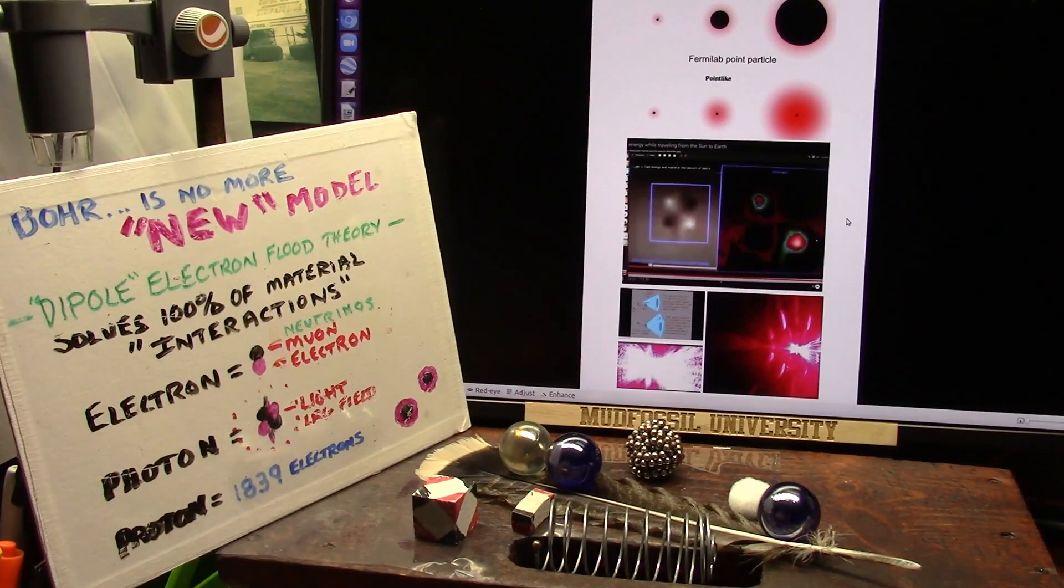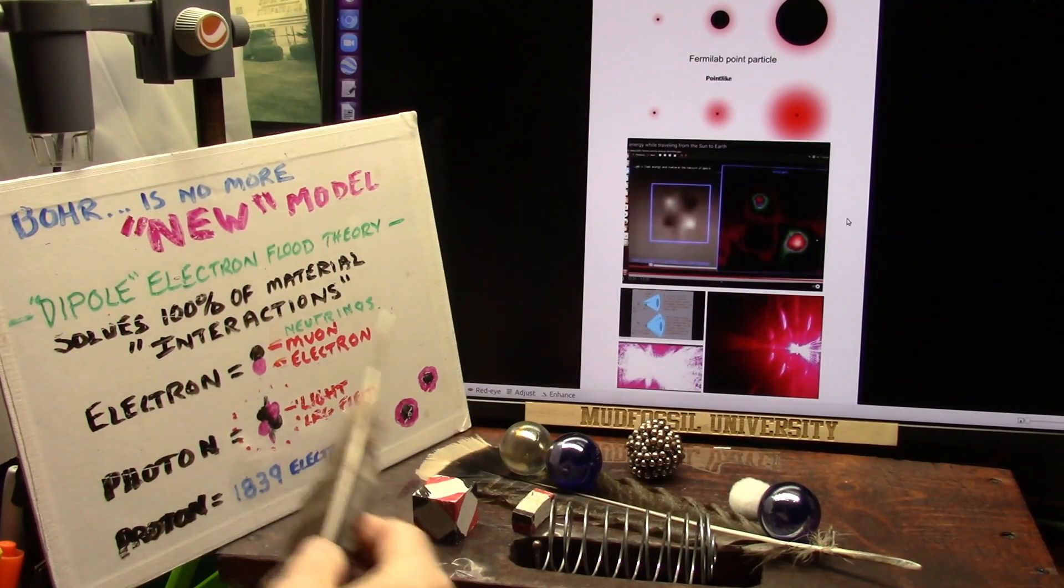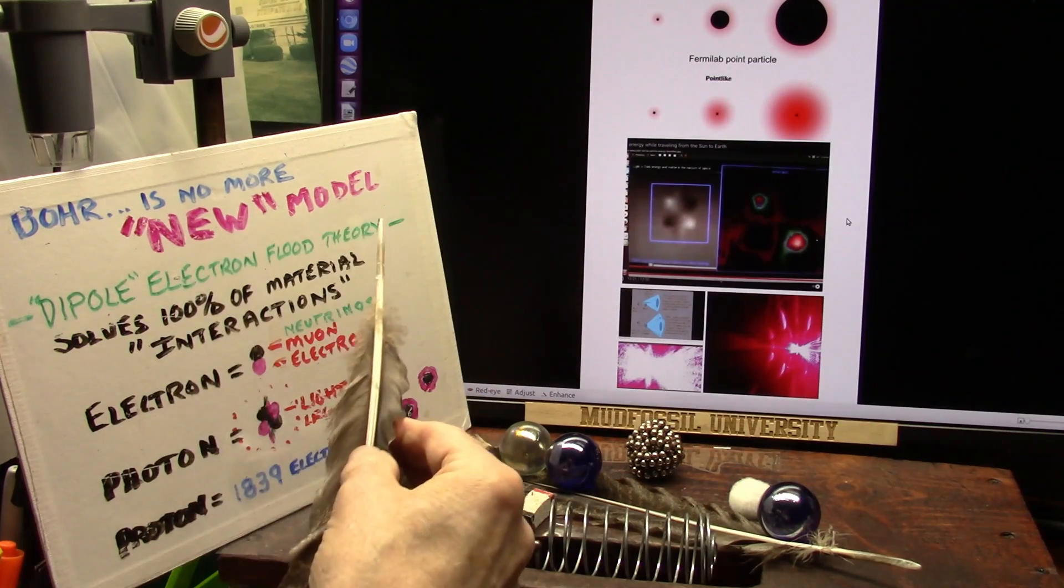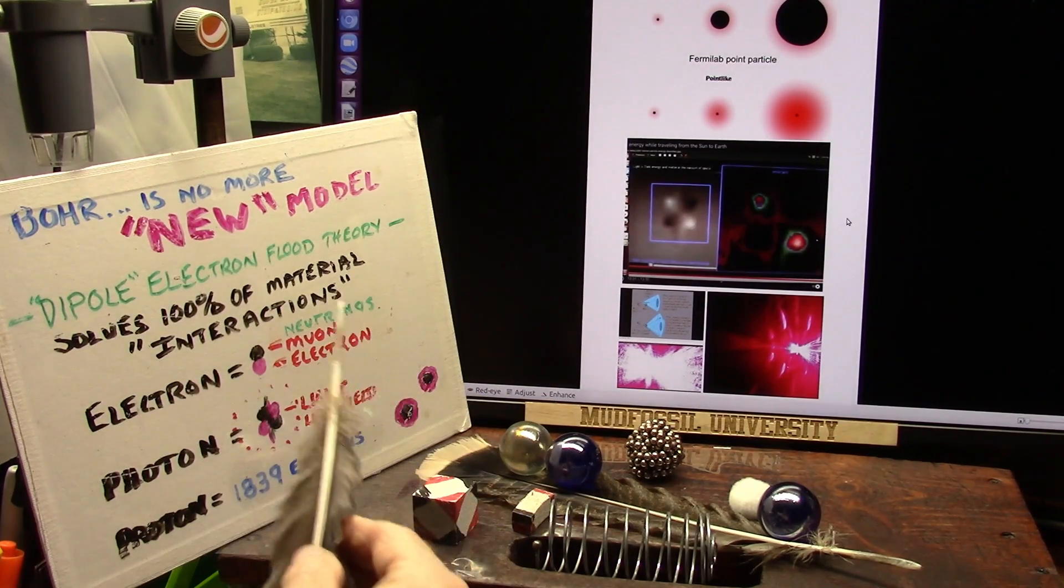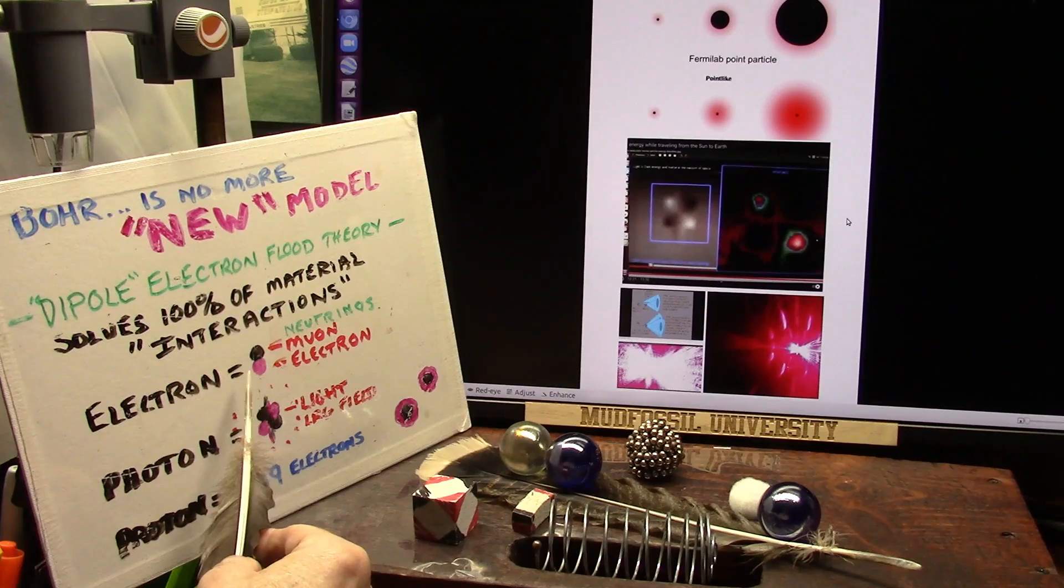So let's vote for the biggest discovery for a very long time. The Bohr model of the atomic theory was totally wrong. It never was right. All particles are made of dipoles.